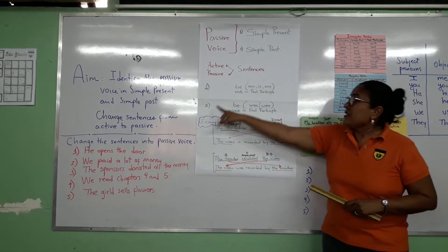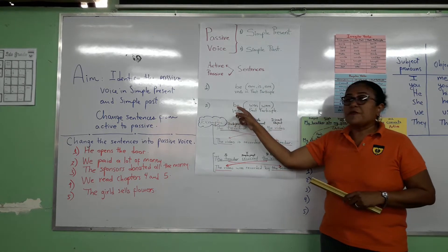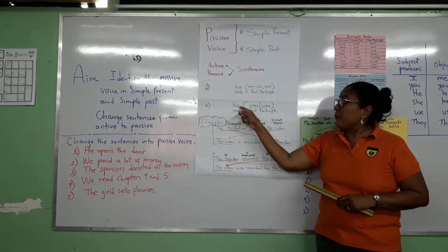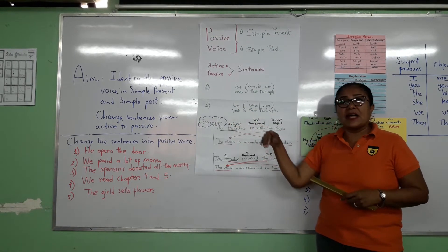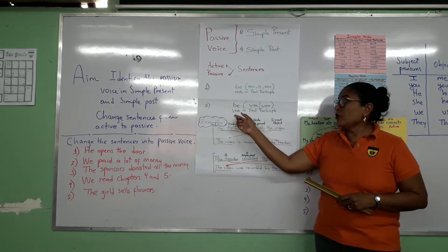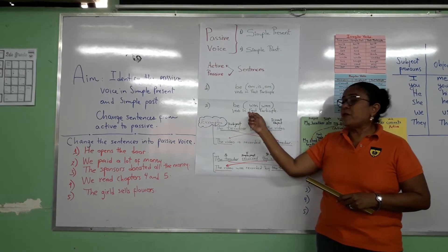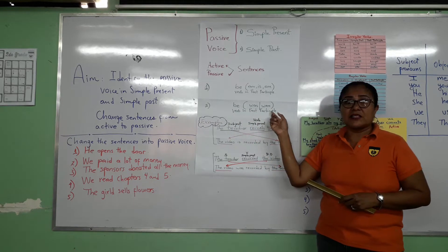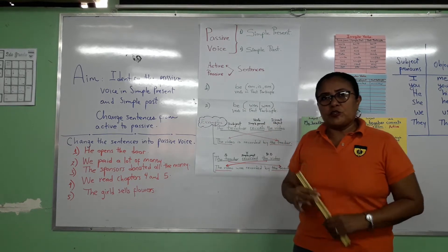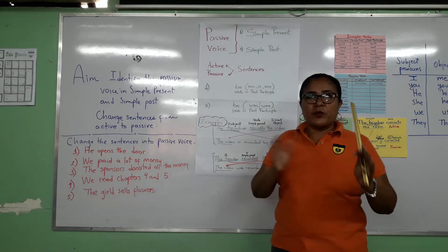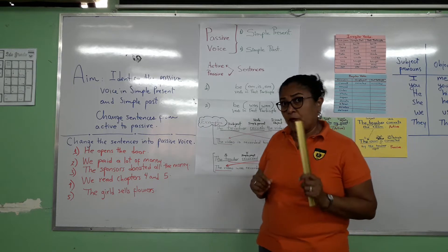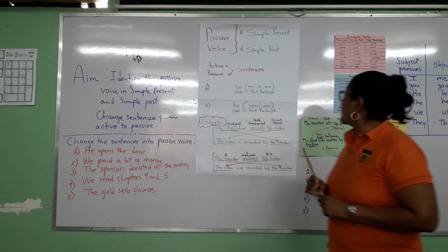In the simple past, we have to use the verb 'be' but in the simple past, also using the verb in the past participle. It is very important for you to remember that we have regular and irregular forms of verbs.